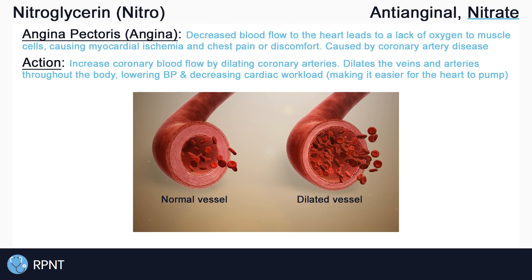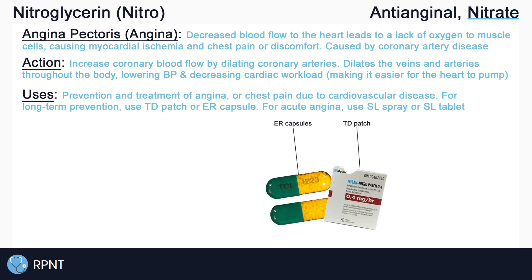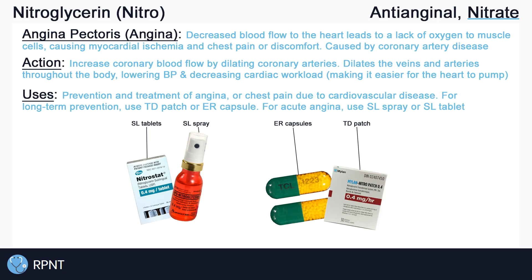Nitroglycerin is primarily used for the prevention and treatment of angina or chest pain due to cardiovascular disease. For long-term prevention of angina, nitroglycerin is often administered by transdermal patch, but can also be administered orally in an extended-release capsule. For acute angina, nitroglycerin is often administered sublingually by spray or by dissolvable tablet. Nitroglycerin can also be used to control hypertensive emergencies by the IV route.